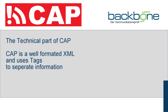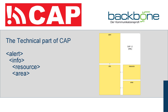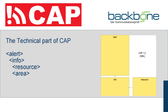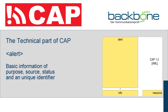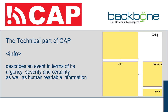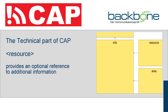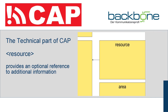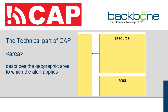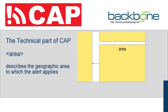So, what is behind CAP? First of all, it's a well-formatted XML and is separated into alert, info, resource, and area segments. The alert part provides the basic information about the current message — its purpose, its source, its status, and its unique identifier. The info part describes an event in terms of its urgency, severity, and certainty, as well as human-readable information. The resource part provides optional reference to additional information. The area part describes the geographic area to which the alert applies.